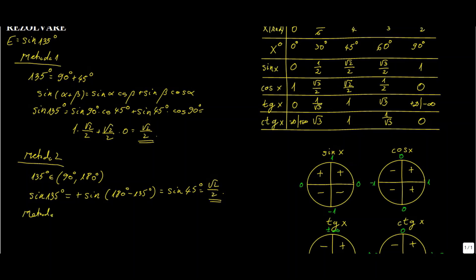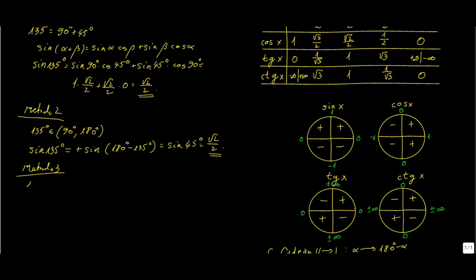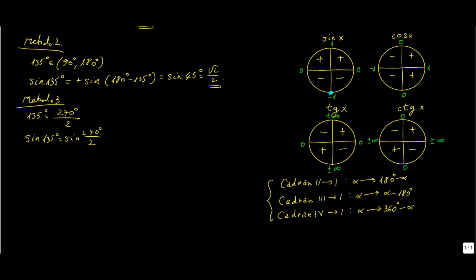Metoda a treia: observăm că 135 de grade se mai poate scrie ca 270 de grade supra 2. 270 de grade este limita între cadranul 3 și 4. Prin urmare, unghiul respectiv îl putem gândi fie în cadranul 3, fie în cadranul 4 — este aceeași formulă de reducere. Sinus de 135 de grade egal cu sinus de 270 de grade pe 2. Vă reamintesc formula sinusului unghiului pe jumătate: sinus de alfa pe 2 este radical din 1 minus cosinus de alfa, totul pe 2, plus sau minus, depinde de semnul lui sinus în acel cadran.